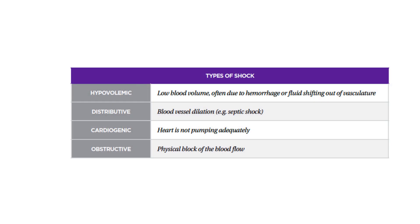The four types of shock are hypovolemic, distributive, cardiogenic, and obstructive. Hypovolemic shock occurs when there is a low blood volume, often due to hemorrhage or fluid shifting out of the vasculature. Distributive shock occurs when blood vessels are dilated, like in septic shock. Cardiogenic shock occurs when the heart is not pumping adequately. Obstructive shock occurs when there is a physical blockage of the blood flow.